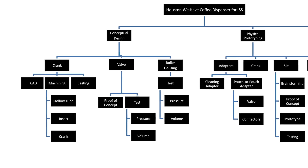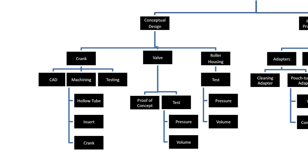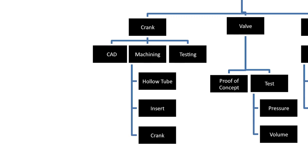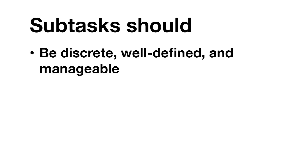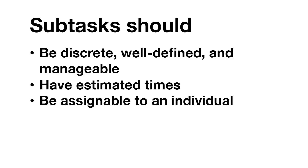In the conceptual design, they were designing a crank, a valve, and a roller housing. In looking at the conceptual design of the crank, the team further subdivided it into individual sub-tasks. When making a work breakdown structure, you want to continue to divide your tasks until you have very discrete, well-defined, and manageable sub-tasks. These sub-tasks can then be used to estimate how much time they will take, as well as to assign them to an individual on your team.